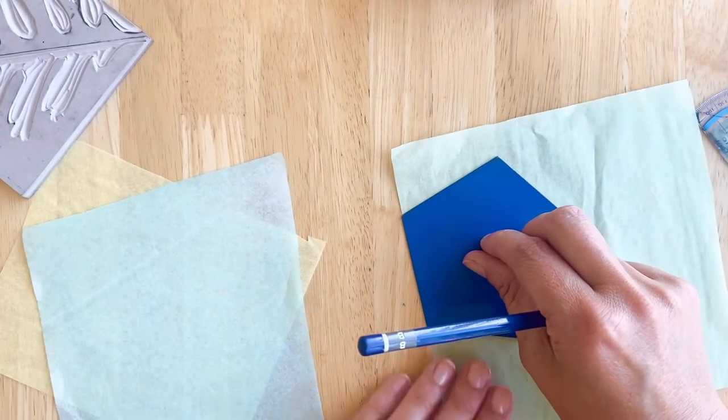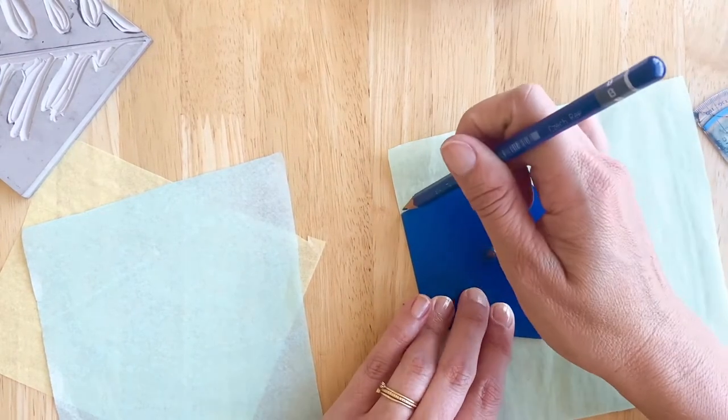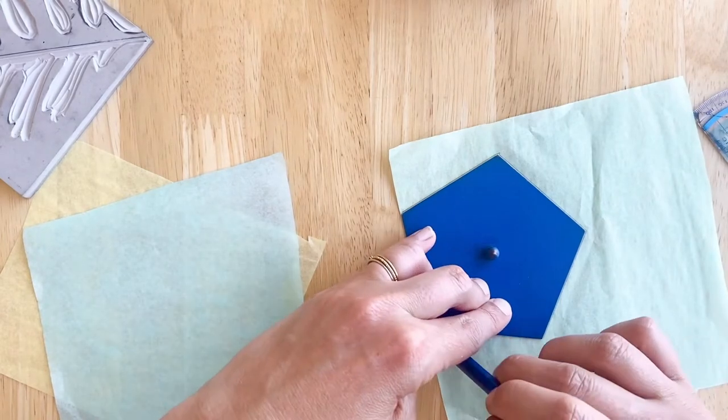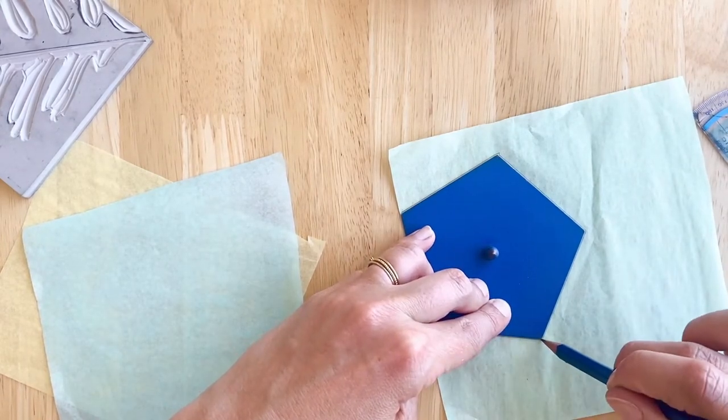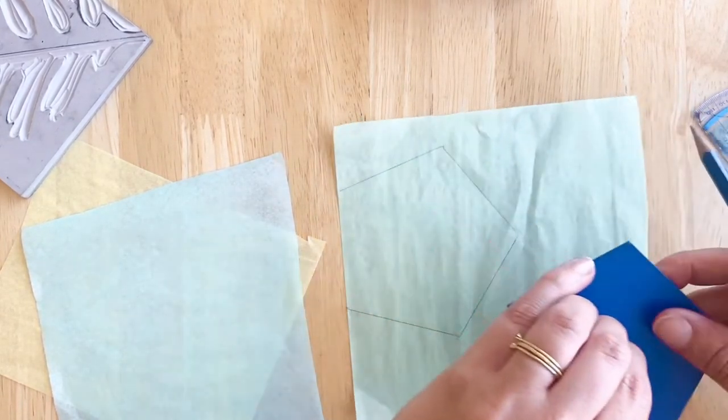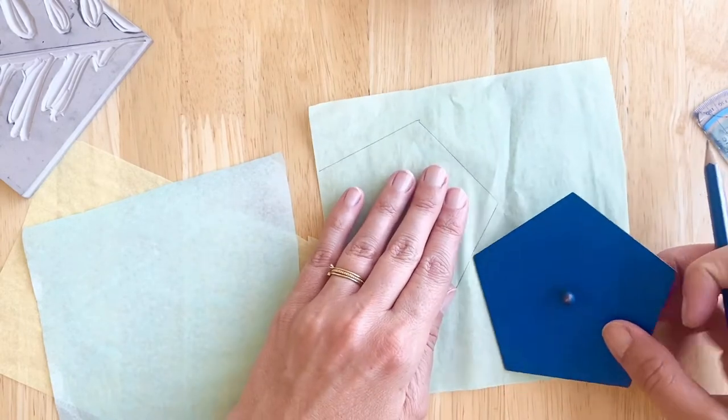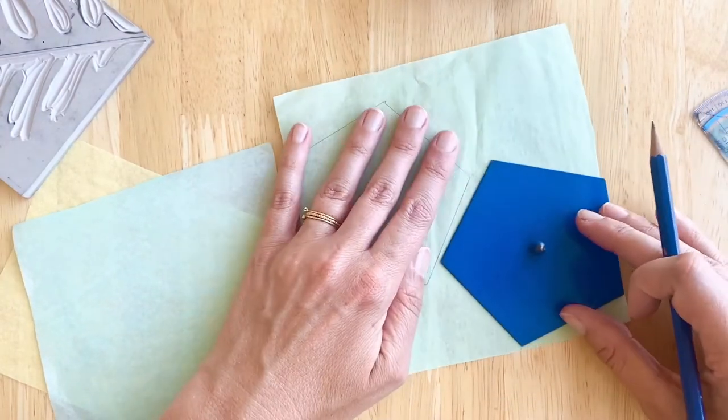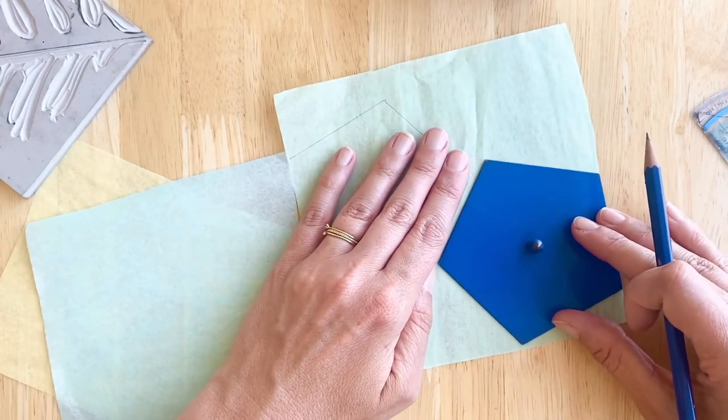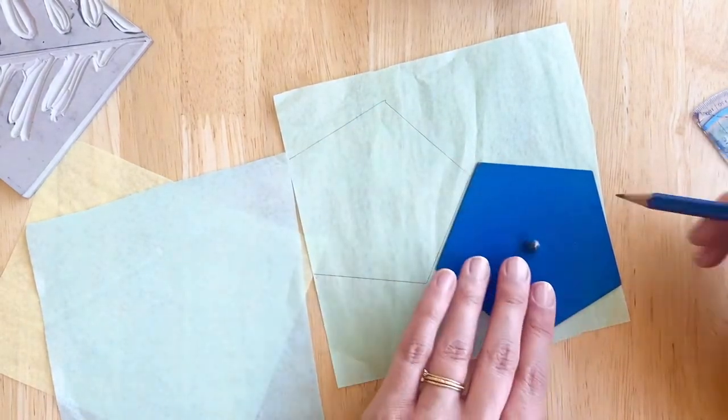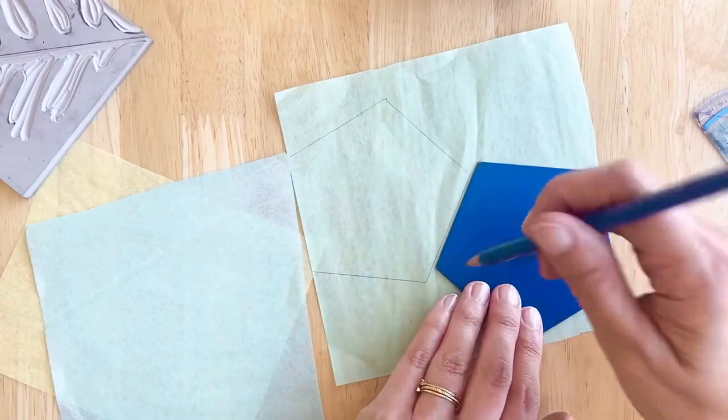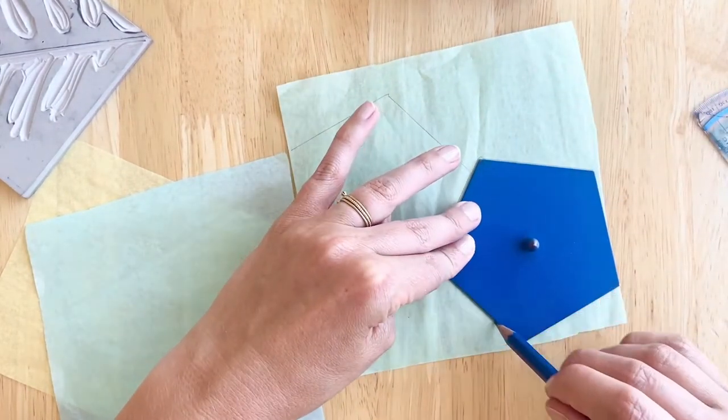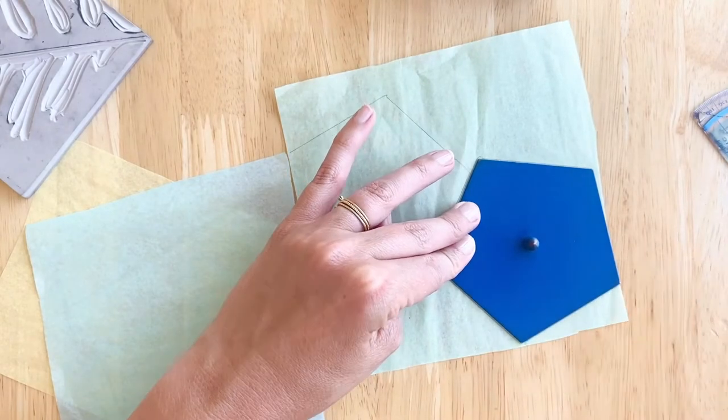And I'm going to make more than one of each of the shapes just in case it gets a little messed up when I'm trying to put it on the print. This process is a bit fiddly and it takes a few goes to really get the hang of it. So having extra pieces, especially if it's a shape you really like, is really helpful. And then you can just cut them all out at once and you have them all lined up.